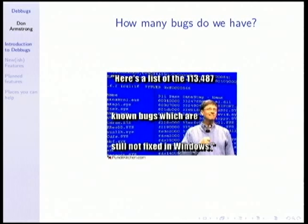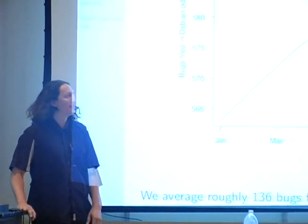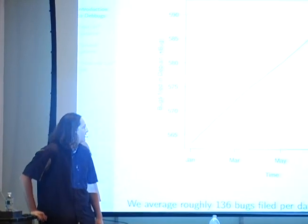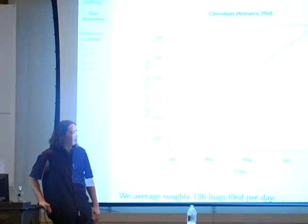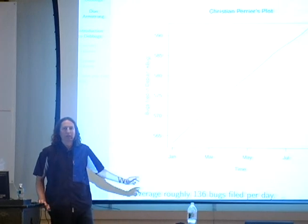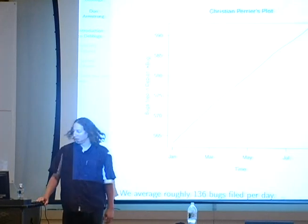So how many bugs do we actually have? We actually have more than apparently Windows does. This is bug growth versus time. As you can see, we've gone from nearly zero bugs to a lot. This is Christian's favorite plot, since he's always interested in what time we're passing through different hallmarks. Right now we're roughly in a linear phase, and we tend to average about 136 bugs filed per day. These statistics aren't very accurate, but they just give you an idea of what's going on.